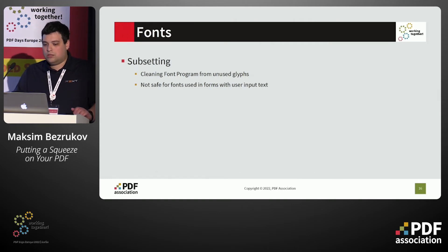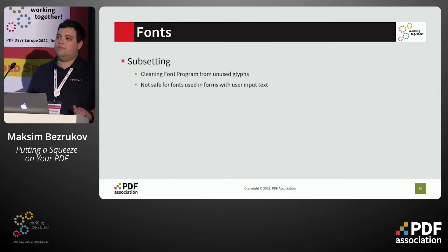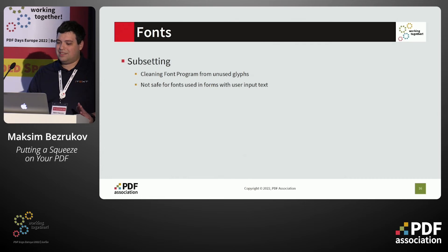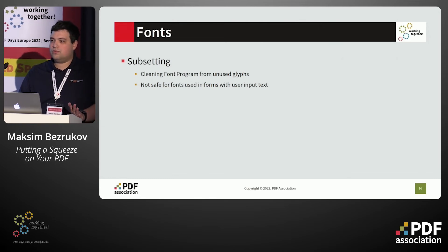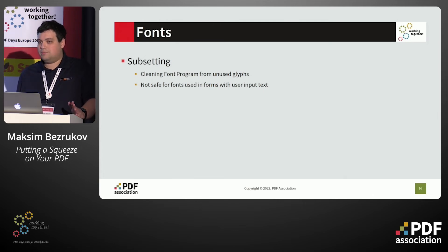Now let's continue with fonts, starting with font subsetting. Font subsetting is a PDF specification mechanism that allows us to not embed the full font file into the PDF, but rather embed only its partial content containing data for the glyphs used in the PDF. For example, if we have a huge font with thousands of glyphs but only use 100 of them, we can subset it and reduce the font file size. This operation is a bit unsafe for fonts used in forms without flattening those forms — specifically in forms with user input text — because if subsetting is applied and then the user tries to type characters for which there are no glyphs in the subset, it may produce unexpected behavior in appearance.